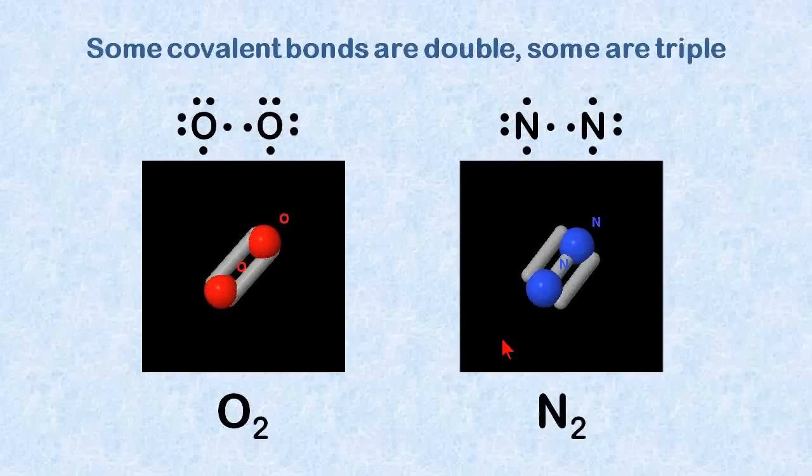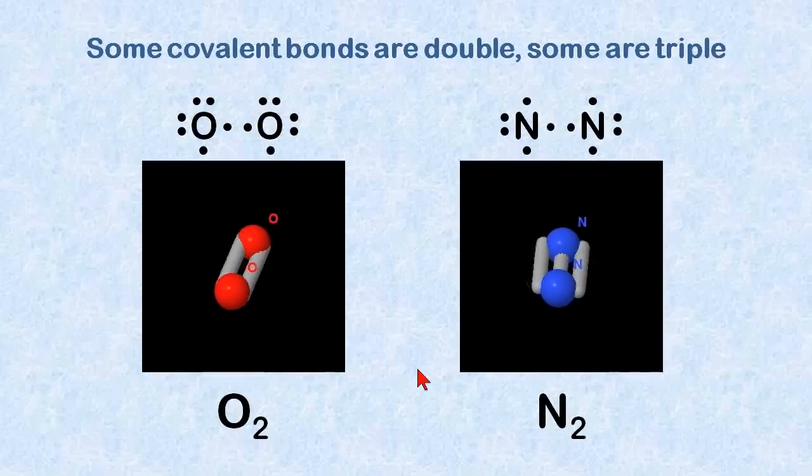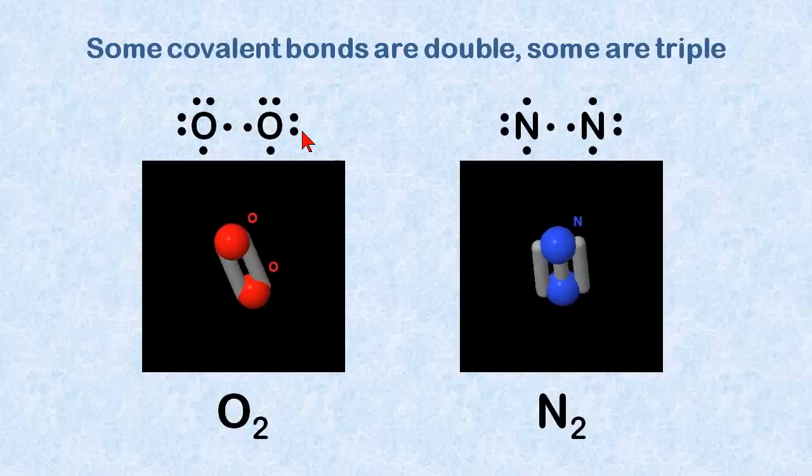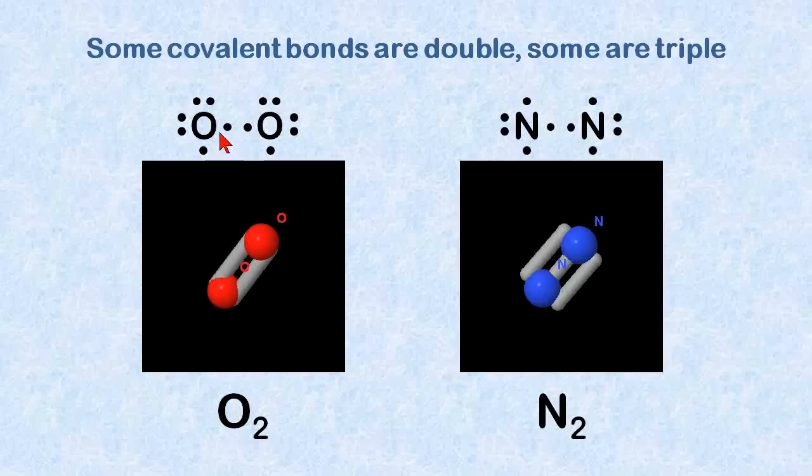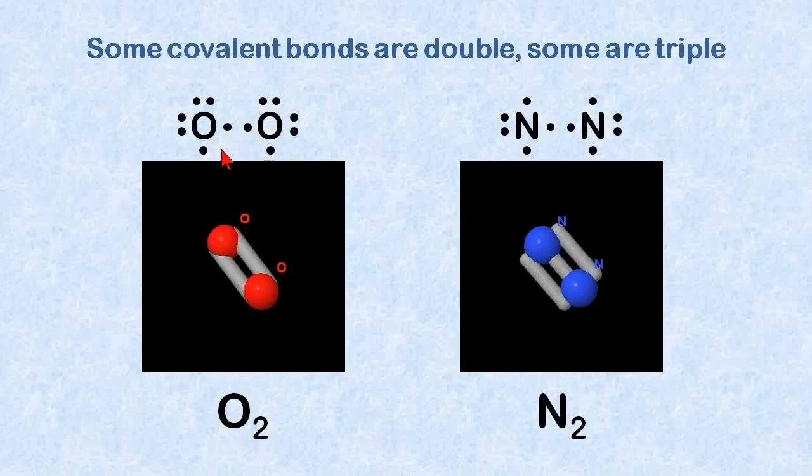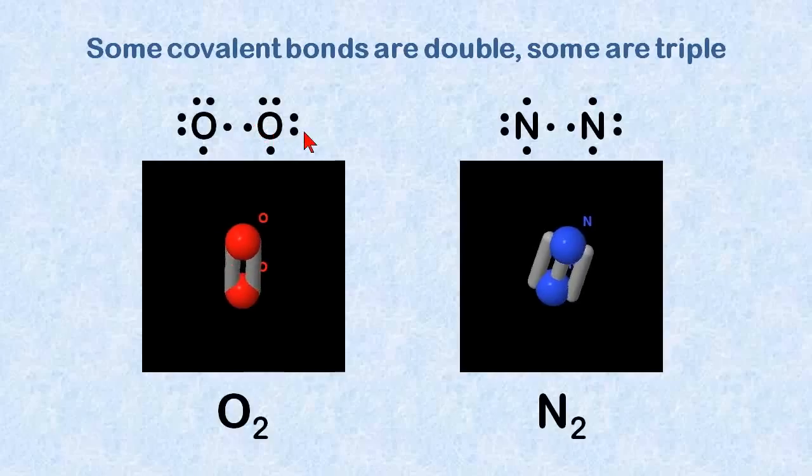Let's take a look at a couple other diatomic molecules. This is oxygen. Note that oxygen has six electrons in its valence shell. Two of them get together and they have to share two of these electrons each. It becomes a bond which has two lines on it.